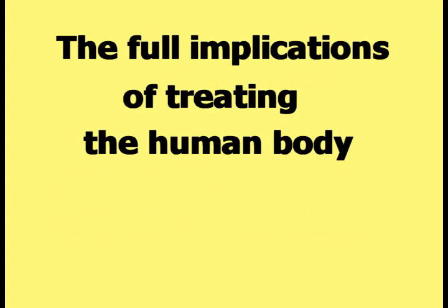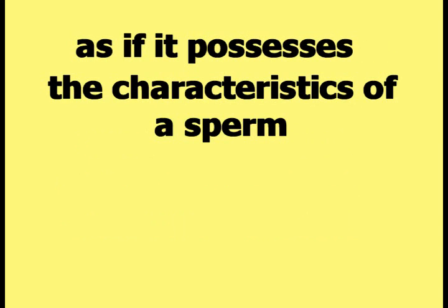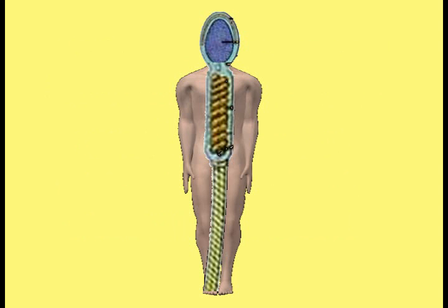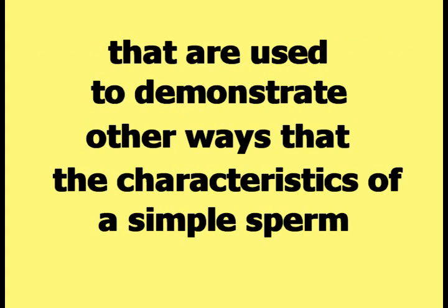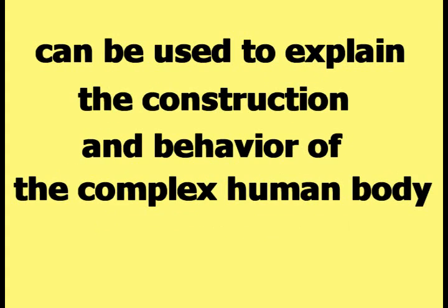The full implications of treating the human body as if it possesses the characteristics of a sperm cannot be demonstrated with the single sperm view shown here. Alternative versions of the sperm view have been created to demonstrate other ways that the characteristics of a simple sperm can explain the construction and behavior of the complex human body.